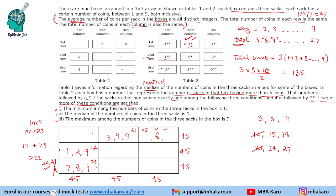Most people skipped this part and struggled after this point. Using the known totals 12, 24, and 21 in columns and rows, we can derive the remaining totals. Specifically: 12 + 24 = 36, so the missing total in that row is 9. And 9 + 21 = 30, so another total is 15. We now knock 9 and 15 off our remaining list.